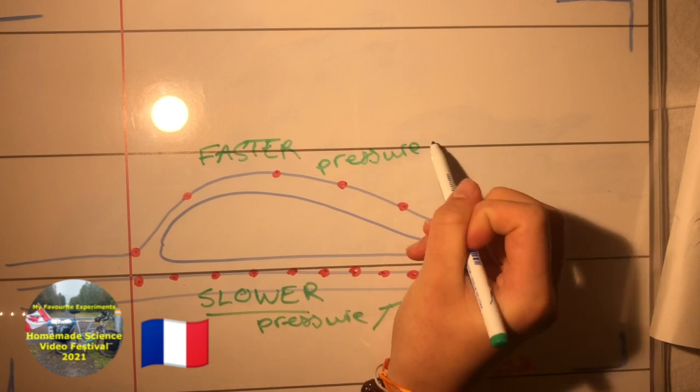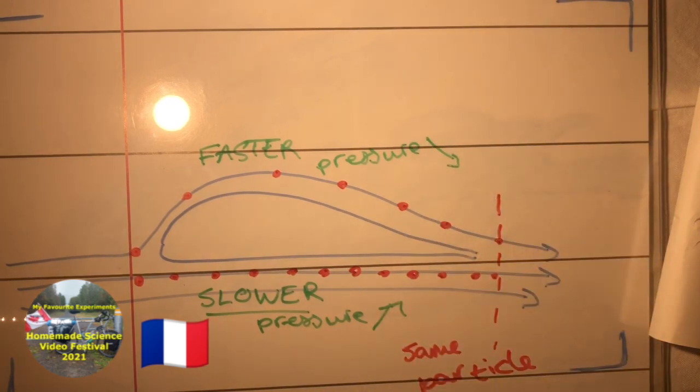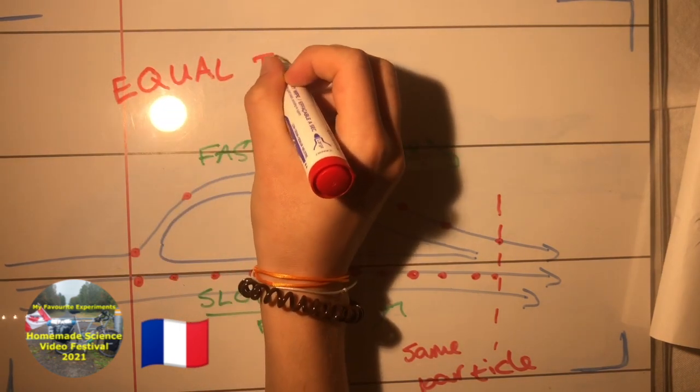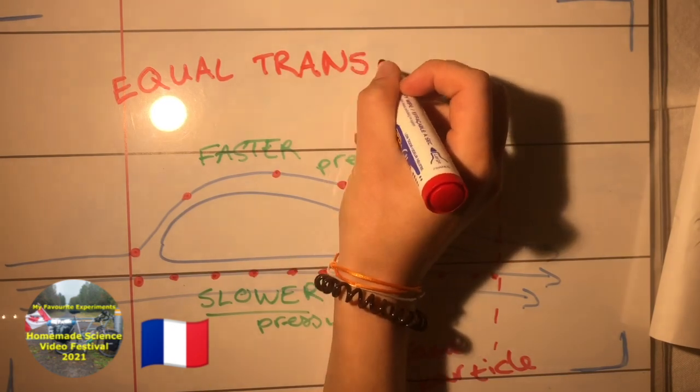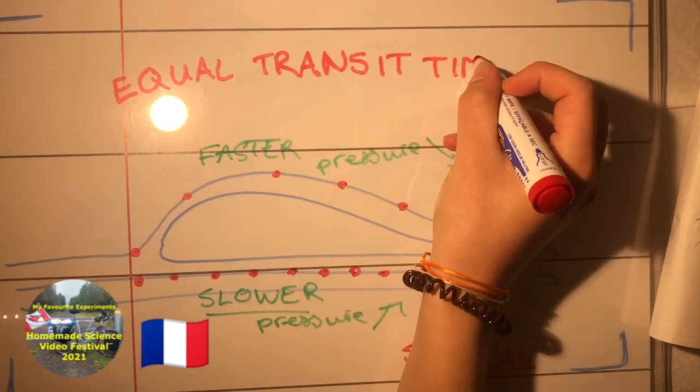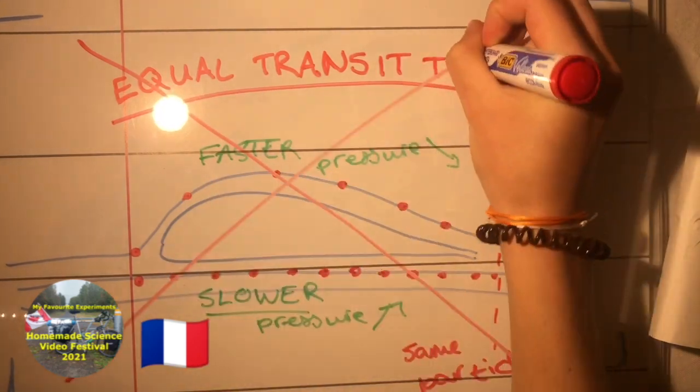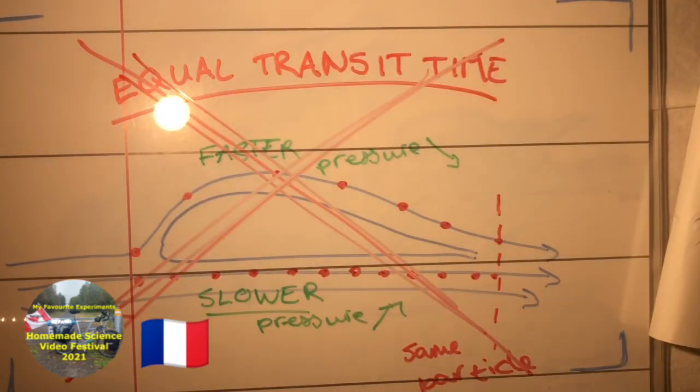When applying Bernoulli's principle to this, the top of the wing would be low in pressure and the bottom would be high. Now, sadly, this notion, also called the equal transit time theory, is not true. No law in nature says that the same particles need to meet again at the end of the wing.